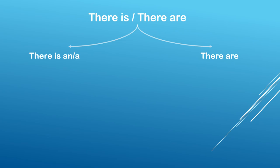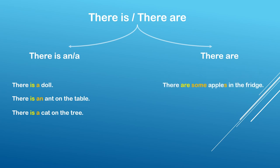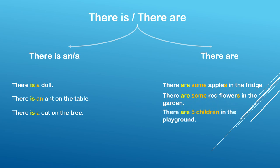We use 'there is' when there is only one noun — one thing. For example: there is a doll, there is an ant on the table, there is a cat on the tree. We use 'there are' for plurals: there are some apples in the fridge, there are some red flowers in the garden, there are five children in the playground.